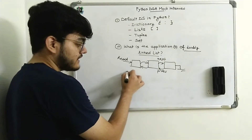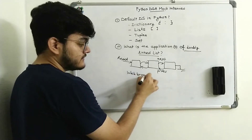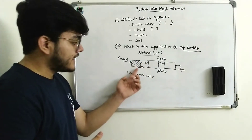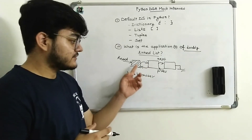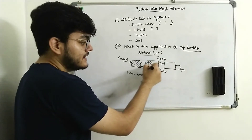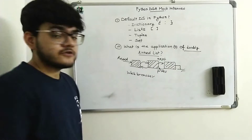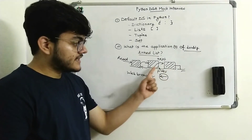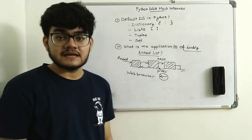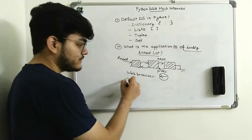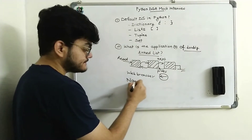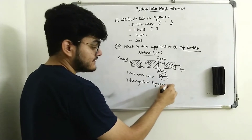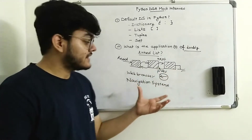The application is in web browsers. When you are visiting a website, you navigate to a second website by clicking a link, then to a third one. There is a back button functionality inside a web browser — when you click the back button it takes you to the previous web page. We can use the doubly linked list concept here. The second application is navigation systems, where we also want access to previous navigation history. Make sure you remember all of these applications when going to an interview.